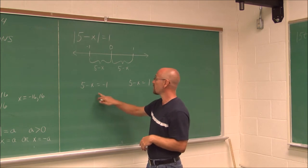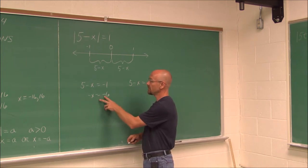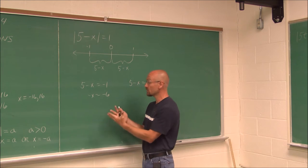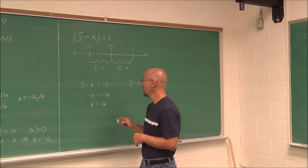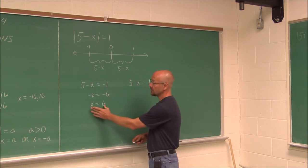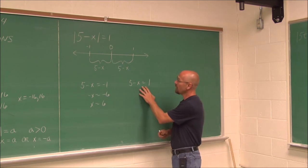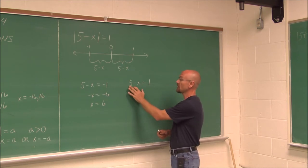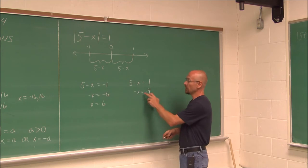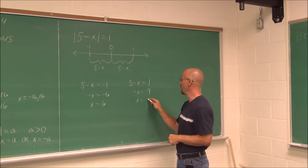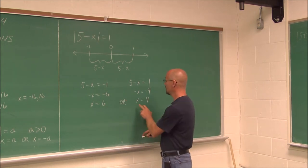Solving the first equation, I subtract 5 from both sides and get negative x equals negative 6. Multiplying both sides by negative 1 gives x equals positive 6. For the second equation, I subtract 5 from both sides — 5 from 1 is negative 4 — then divide both sides by negative 1, and get x equals 4. So we have two solutions: x equals 6 or x equals 4.